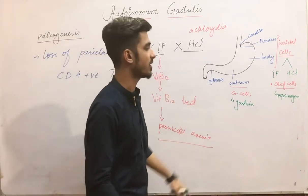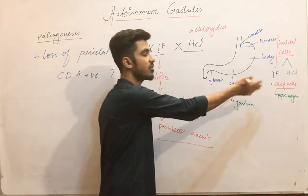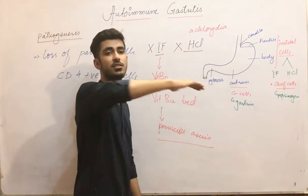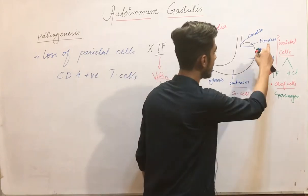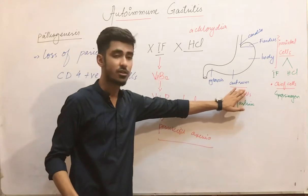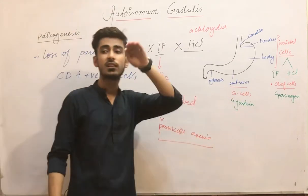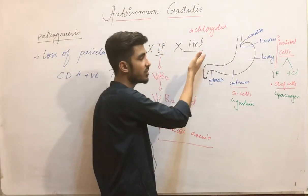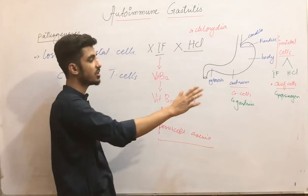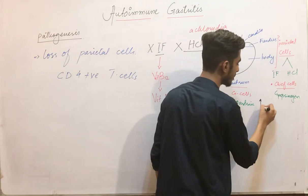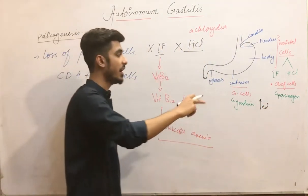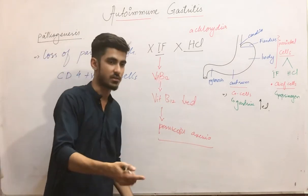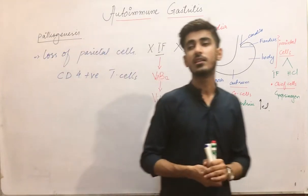There will also be decreased pepsinogen concentration due to loss of chief cells. When hydrochloric acid secretion is decreased, this acts as a stimulus for the G cells in the antrum. Decreased acid secretion leads to increased gastrin production — hypergastrinemia — which results in hyperplasia of the G cells. So the G cells become hyperplastic in this condition.